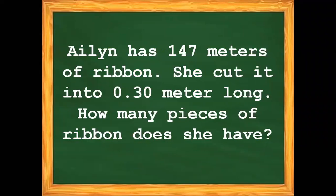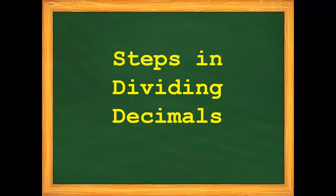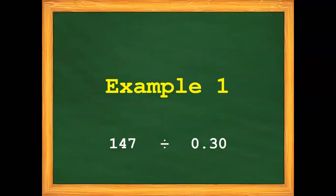Let us solve the problem by following the steps in dividing decimals. For our first example, we have 147 divided by 30 hundredths.